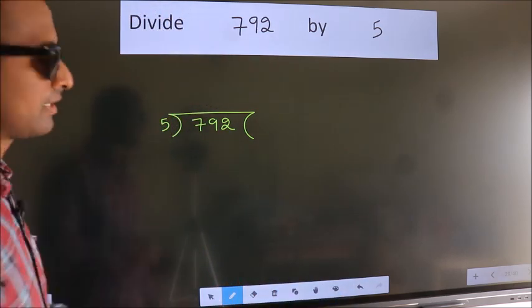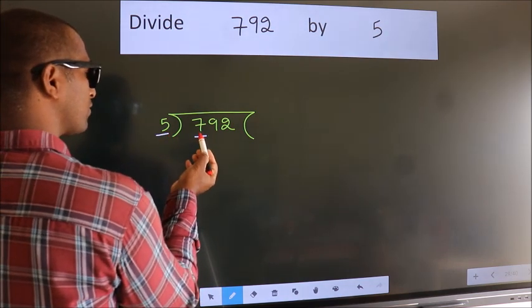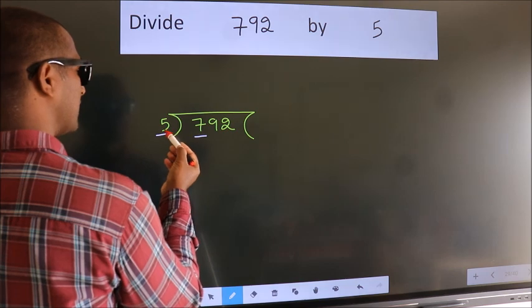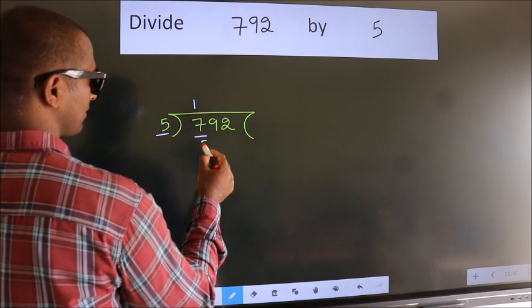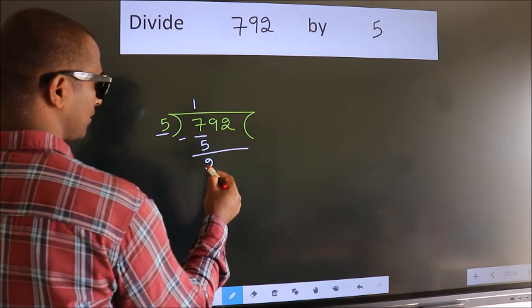Next, here we have 7, here 5. A number close to 7 in the 5 table is 5 once, which is 5. Now we subtract and get 2.